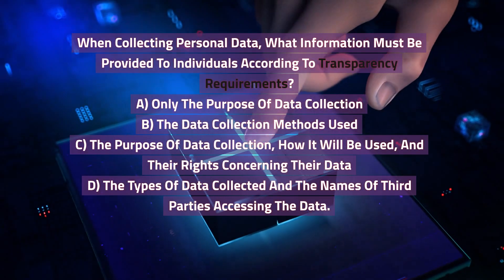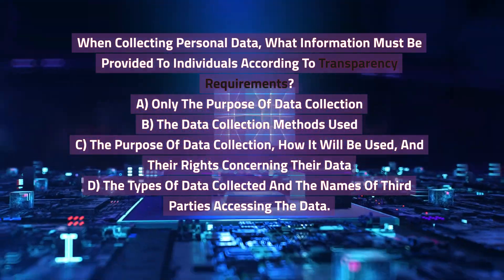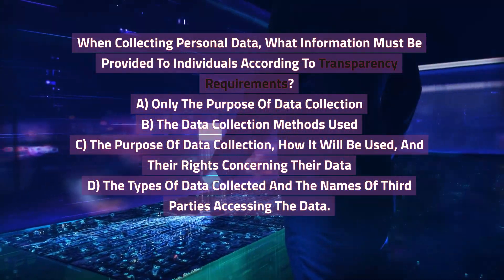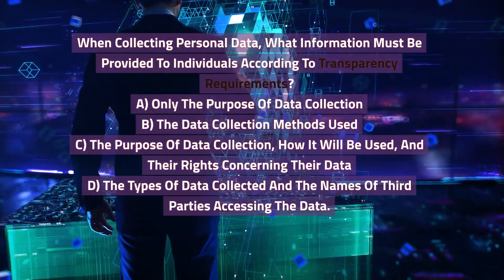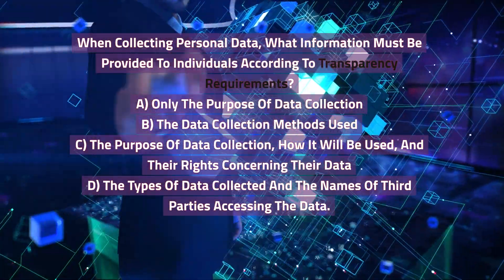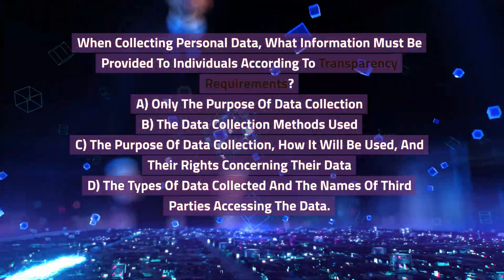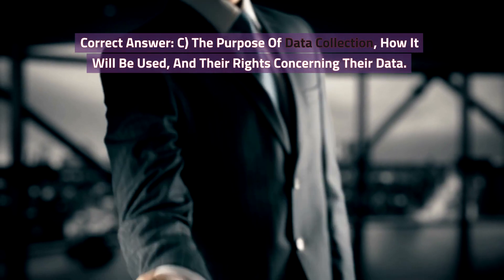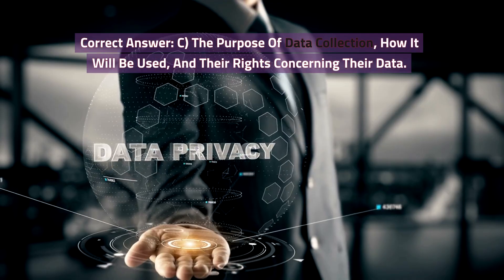When collecting personal data, what information must be provided to individuals according to transparency requirements? A. Only the purpose of data collection. B. The data collection methods used. C. The purpose of data collection, how it will be used, and their rights concerning their data. D. The types of data collected and the names of third parties accessing the data. Correct answer: C. The purpose of data collection, how it will be used, and their rights concerning their data.